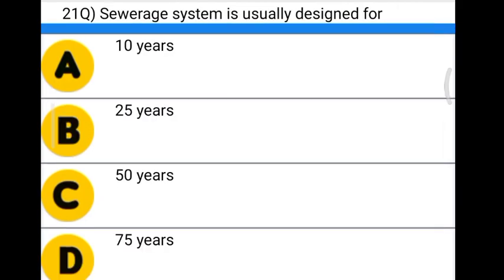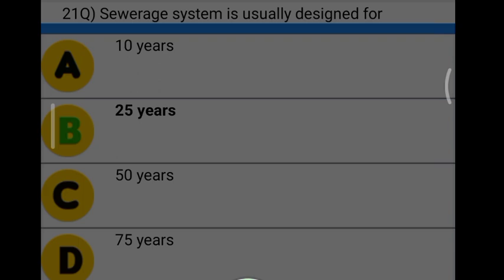Next question: the sewer system is usually designed for — Option A: 18 years. Option B: 25 years. Option C: 50 years. Option D: 75 years. The correct answer is option B, 25 years.